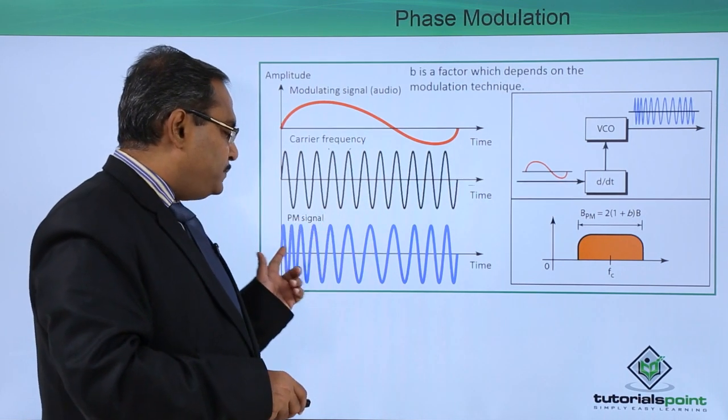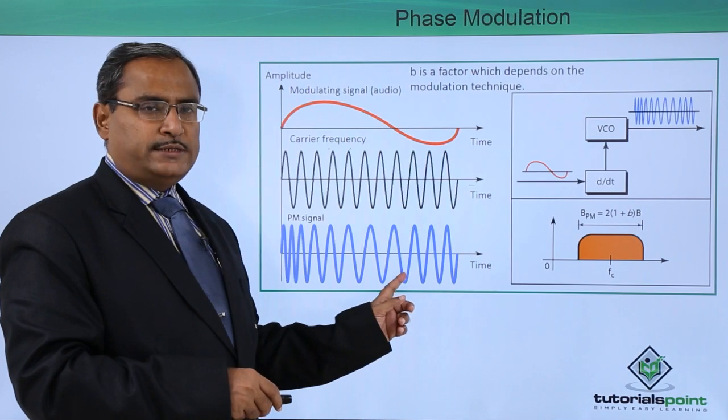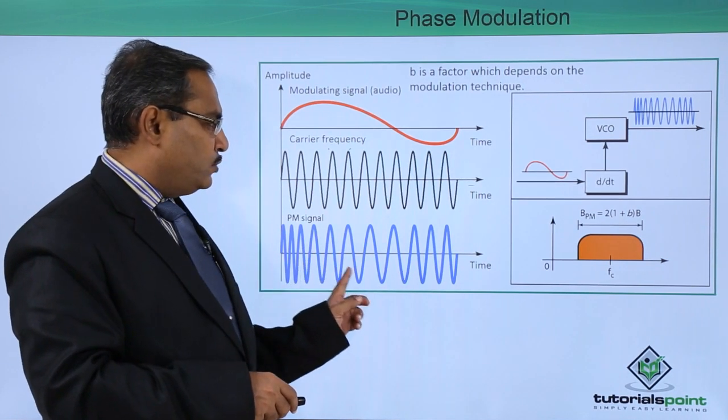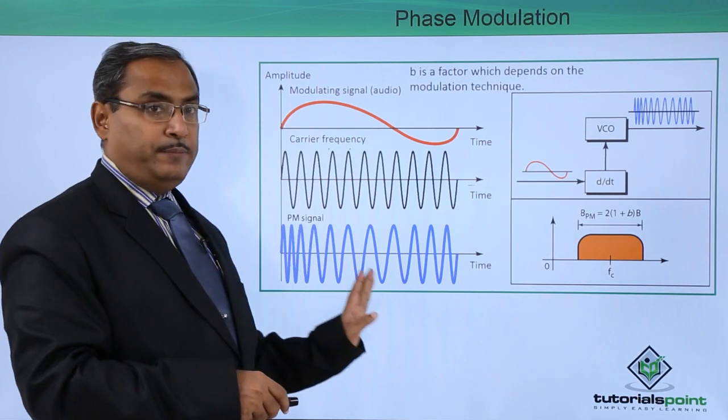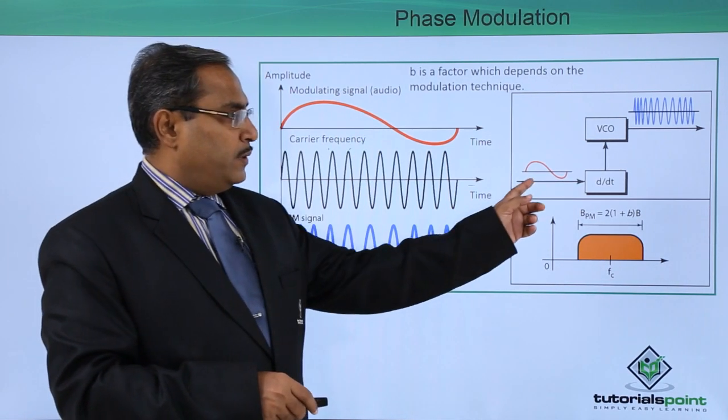Here we can have the respective phase modulated signal we are getting. This is the phase modulated signal, because here you see depending upon this amplitude the phase modulation has taken place. And you can find this one.